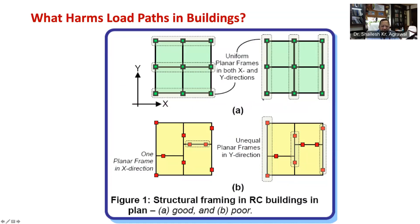Let us first take the most common types of RCC buildings with moment resisting frames, or MRF, as you can see in figure 1. A smooth transfer of inertia forces in a moment resisting frame is critically dependent on the geometry of the frame grid. Some desirable features of a frame grid include: several distinct planar and regular moment resisting frames placed parallel to each other in each of two perpendicular plan directions of the building; columns should run through full height and beams through full width of the building; and uniform spacing between parallel planar moment resisting frames in each plan direction.